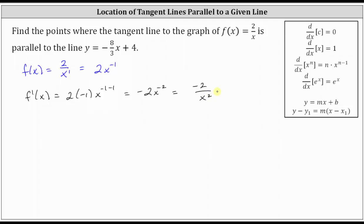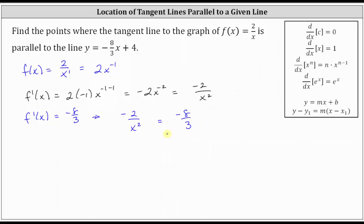Because we're looking for the points where the tangent line is parallel to y = -8/3 x + 4, we will now set the first derivative equal to -8/3. So if f'(x) must equal -8/3, then we know that -2/x² must equal -8/3. To solve for x, we could cross-multiply, or we can multiply both sides of the equation by the least common denominator, which is 3x².